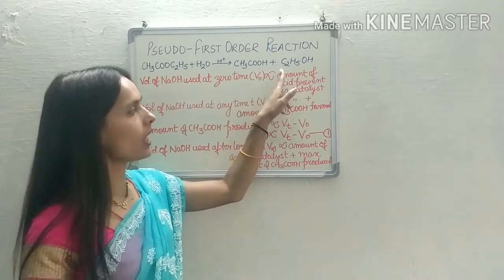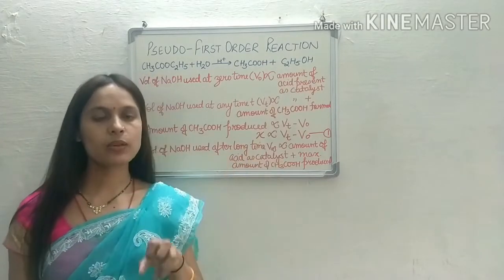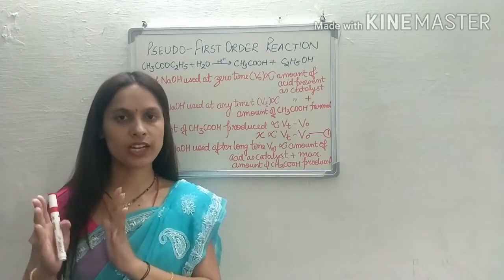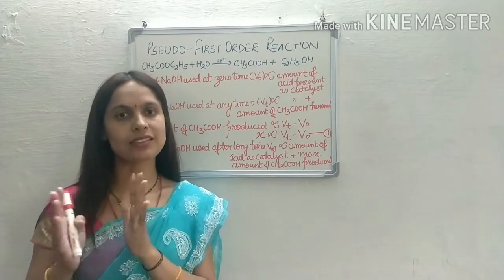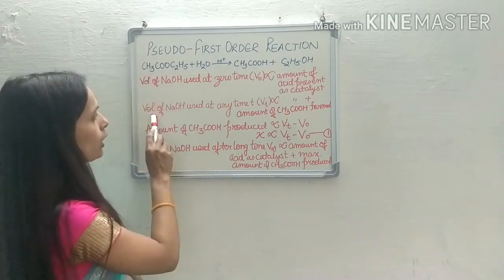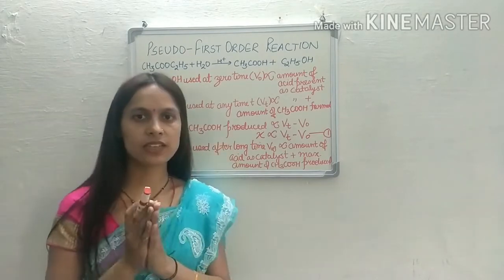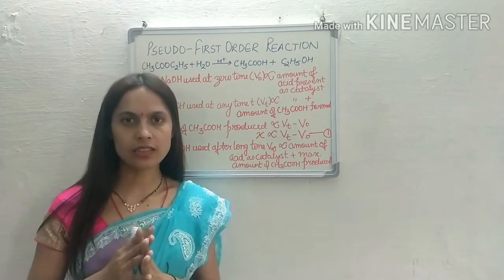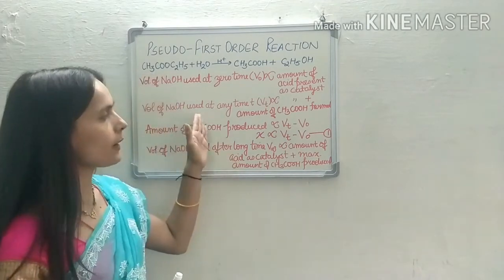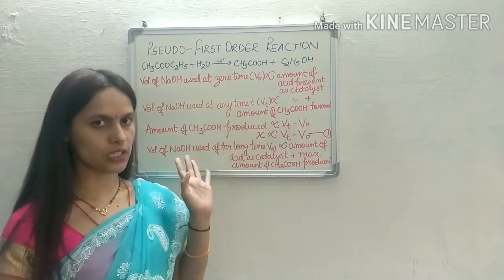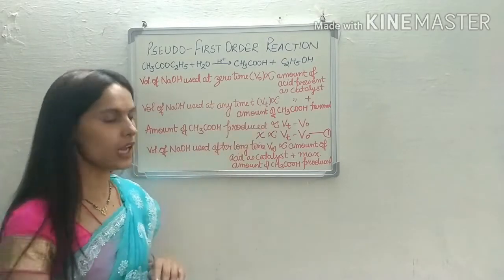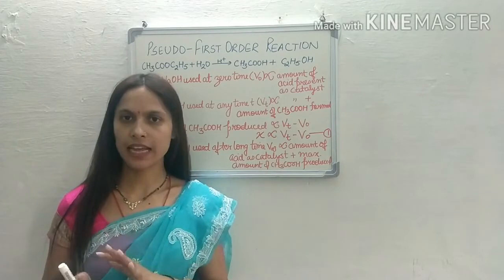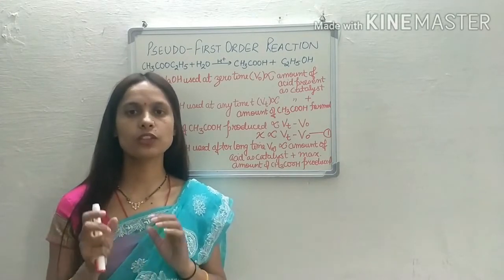The volume of NaOH used at any time t is called VT. Once the reaction has started, the ethyl acetate gets converted into acetic acid. So VT is directly proportional to the amount of acid present as catalyst plus the amount of CH3COOH produced at that time.